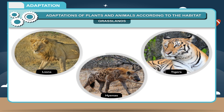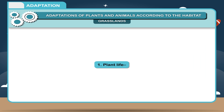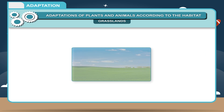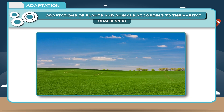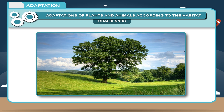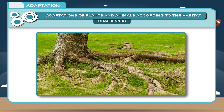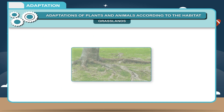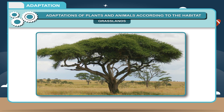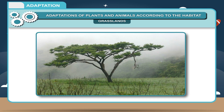1. Plant life: Some adaptations in grasses to survive in these conditions are: a) flexible stalks so that they stand and do not break in windy conditions, b) strong roots to anchor grass, c) small leaves to reduce loss of water. Trees growing in grasslands like acacia also have small leaves.